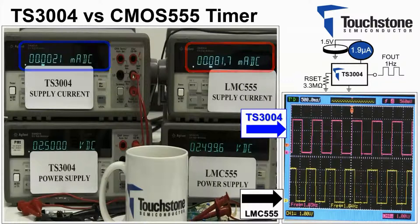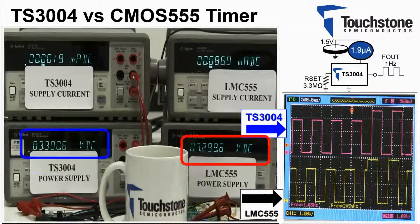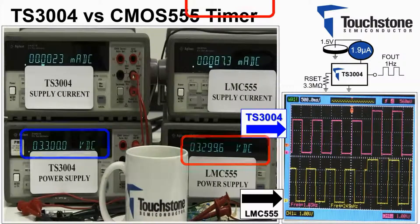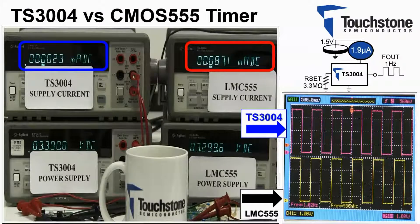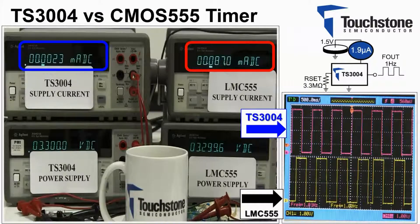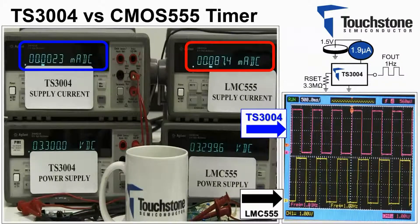Now applying a 3.3 volt supply, as shown here. The CMOS 555 is now consuming 87 microamps of supply current, while the TS3004 is still only demanding 2.3 microamps of current. That's a factor of 38 less supply current.